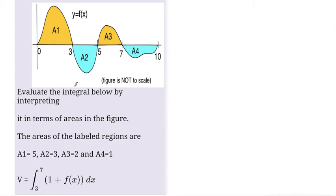This problem says to evaluate the integral below by interpreting it in terms of the area of the figure. The areas of the labeled regions are A1 equals 5, A2 equals 3, A3 equals 2, and A4 equals 1.